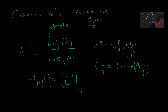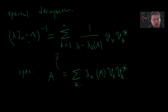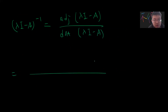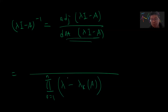So once we have these two ideas, let's start. Consider (lambda_i*I minus A). We get that (lambda_i*I minus A) inverse equals the adjugate of (lambda_i*I minus A) divided by the determinant of (lambda_i*I minus A). The denominator is straightforward — it's just the product over k from 1 to n of (lambda minus lambda_k(A)).